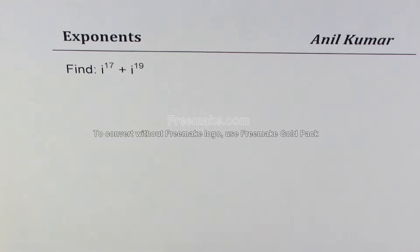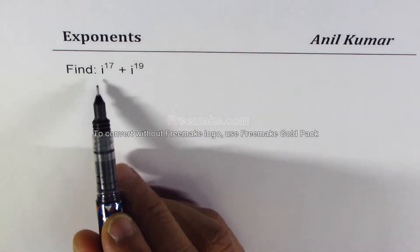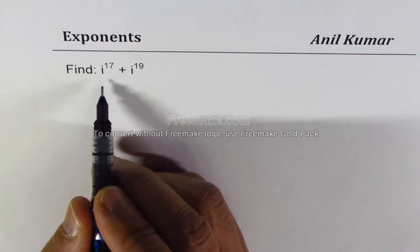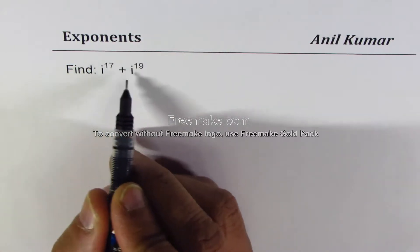I am Anil Kumar and in this video we will learn how to add imaginary numbers when we are given them in exponents form. So the question here is to find what is i to the power of 17 plus i to the power of 19 equals.